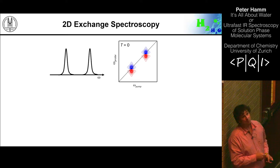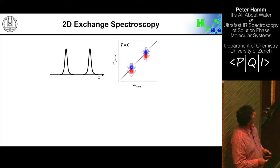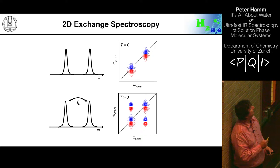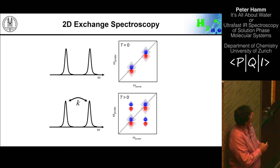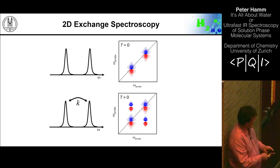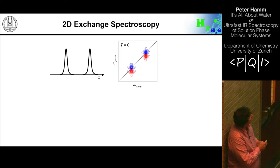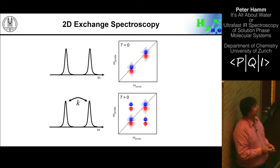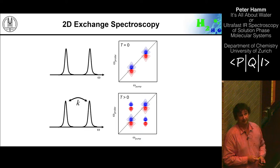If we have a sample with two transitions, we get two of these mode pairs. One of the first experiments is what is called an exchange experiment. Consider an exchange process where molecules which at some instant of time happen to be at one frequency will hop to the other frequency with a certain rate during the waiting time. The result is so-called cross peaks that appear off-diagonal — meaning we pump one state and probe the other state. Whenever such an exchange process is happening, we expect to see those cross peaks.